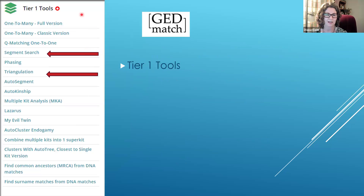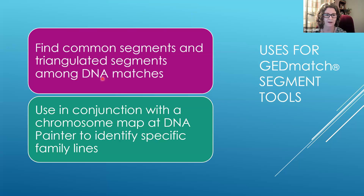Can I find a segment that triangulates between all three of us to show positively a Klein or Klein-Weatherford segment? Because Clemsie married a Weatherford. I was very curious to see what I could find on GEDmatch using some of their tools. When you subscribe to Tier 1, there are a couple of tools we're going to look at: segment search and triangulation. You want to find common and triangulated segments among the DNA matches uploaded to GEDmatch, and you can use that segment data in conjunction with a chromosome map at DNA Painter to identify specific family lines.